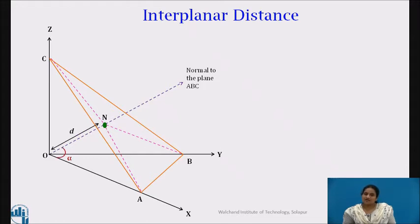Let alpha be the angle between coordinate axis X and ON. Beta be the angle between coordinate axis Y and ON. And gamma be the angle between coordinate axis Z and ON.